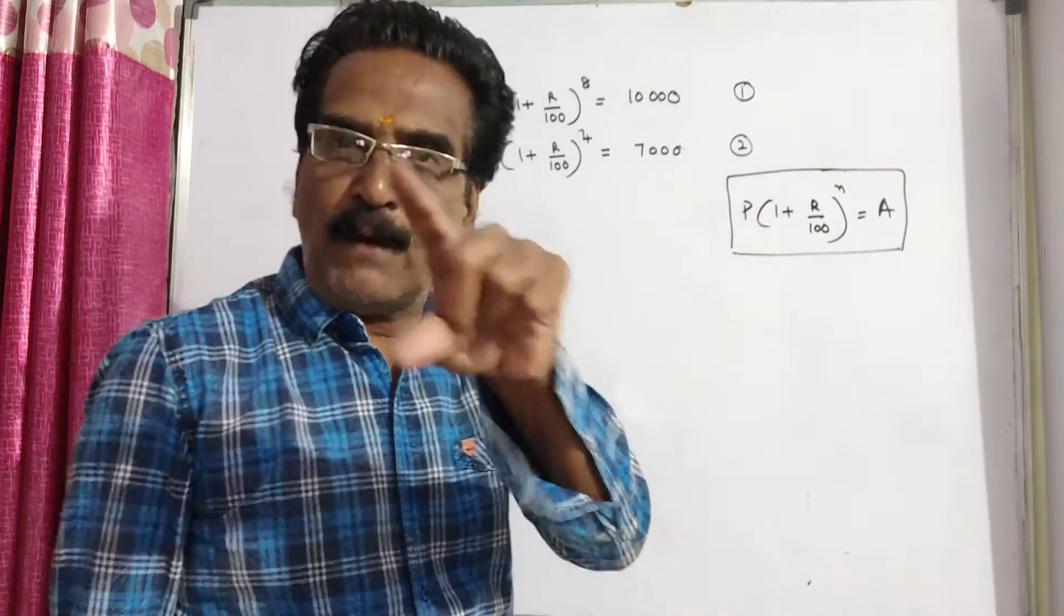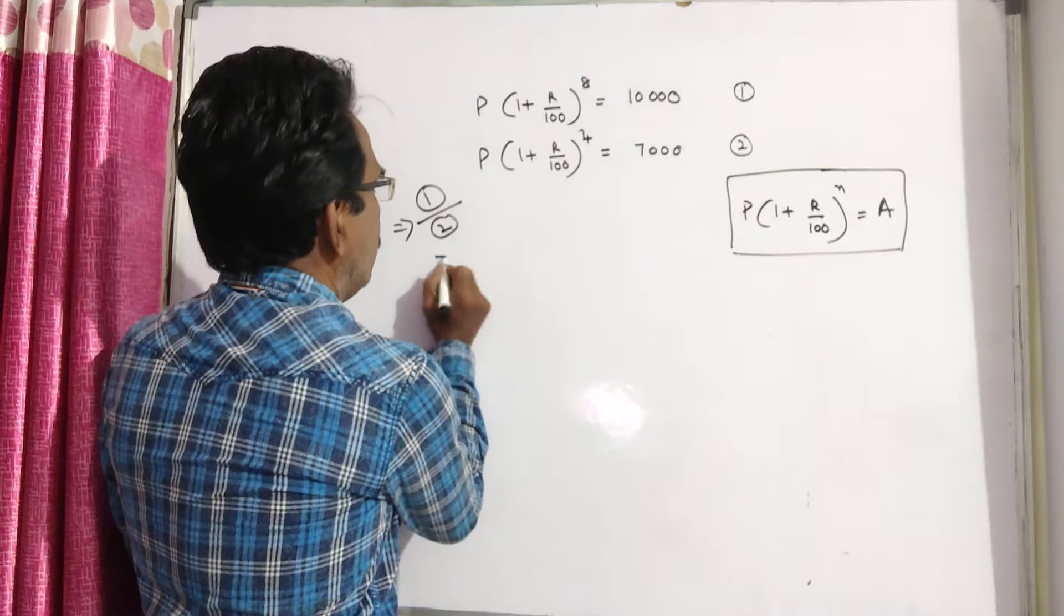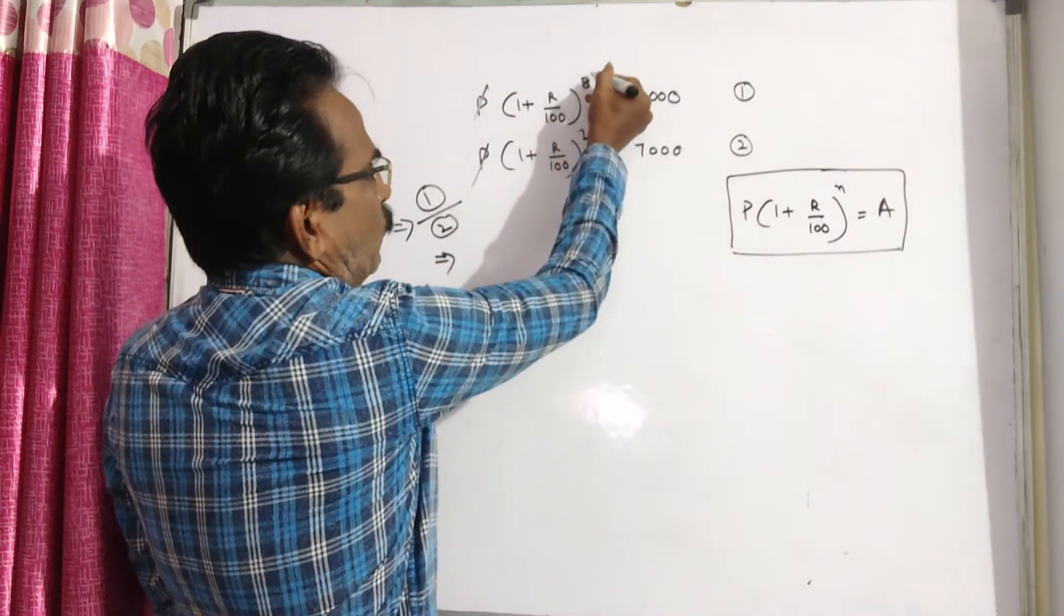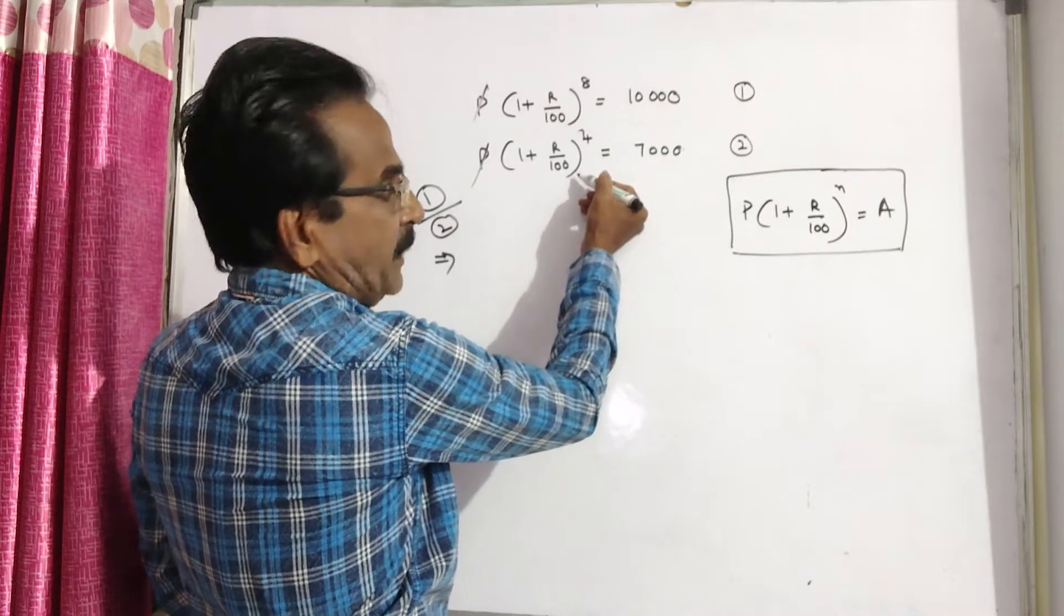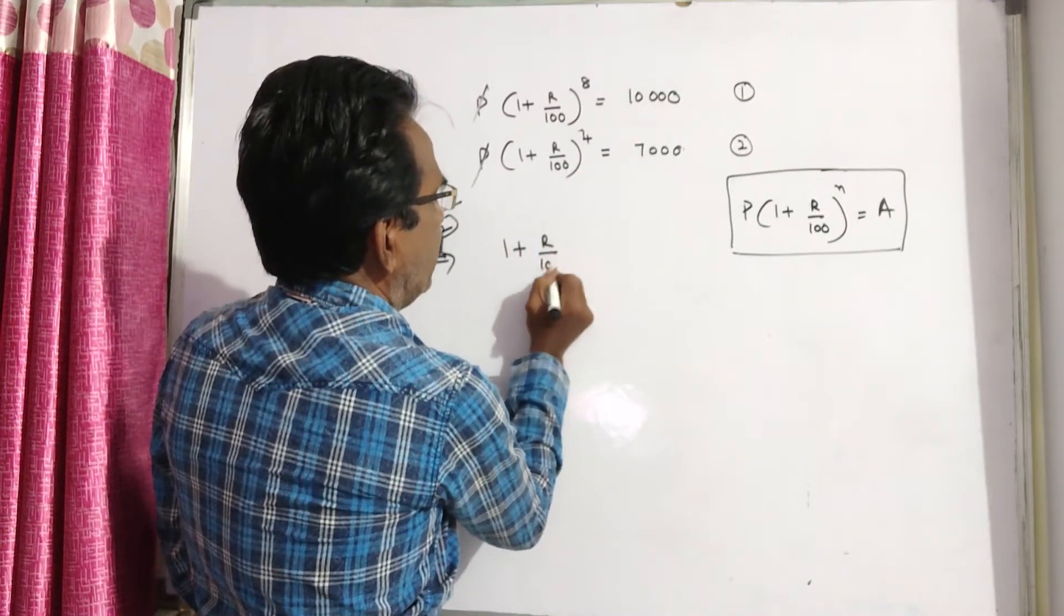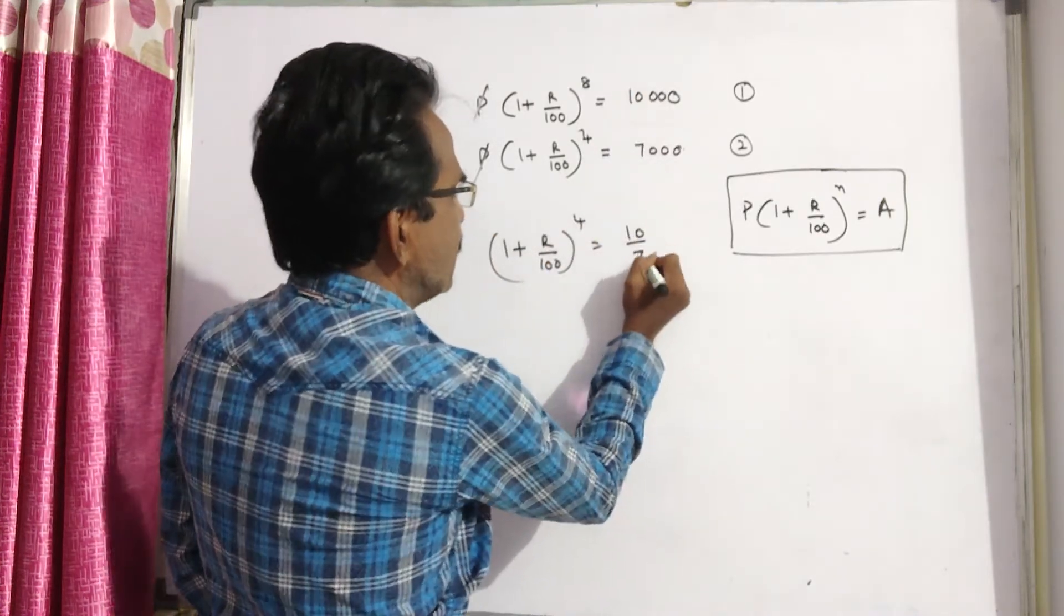Now, let us do equation 1 divided by 2. Dividing, P gets cancelled. 1 plus r by 100 whole power 8 by 1 plus r by 100 whole power 4 implies 1 plus r by 100 whole power 4 is equal to 10 by 7.